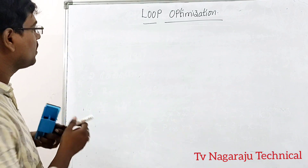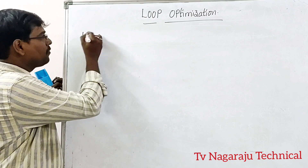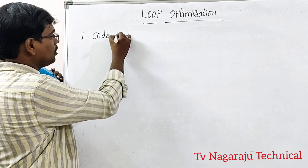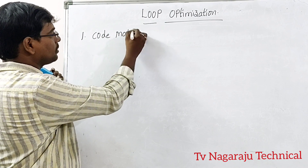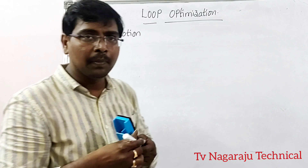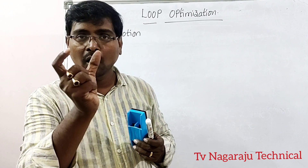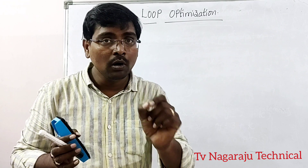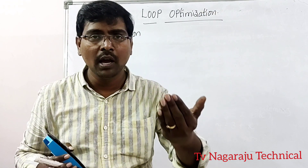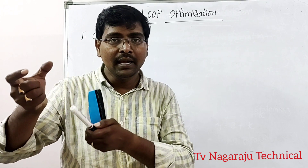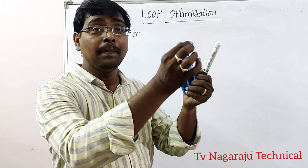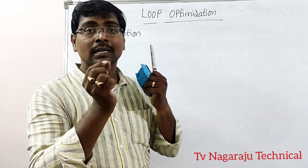The different techniques for loop optimization: the first one is code motion. Code motion simply means moving the code outside of the loop. Which code do we move? If you are writing code inside a loop that does not depend on the loop, such code is moved outside.